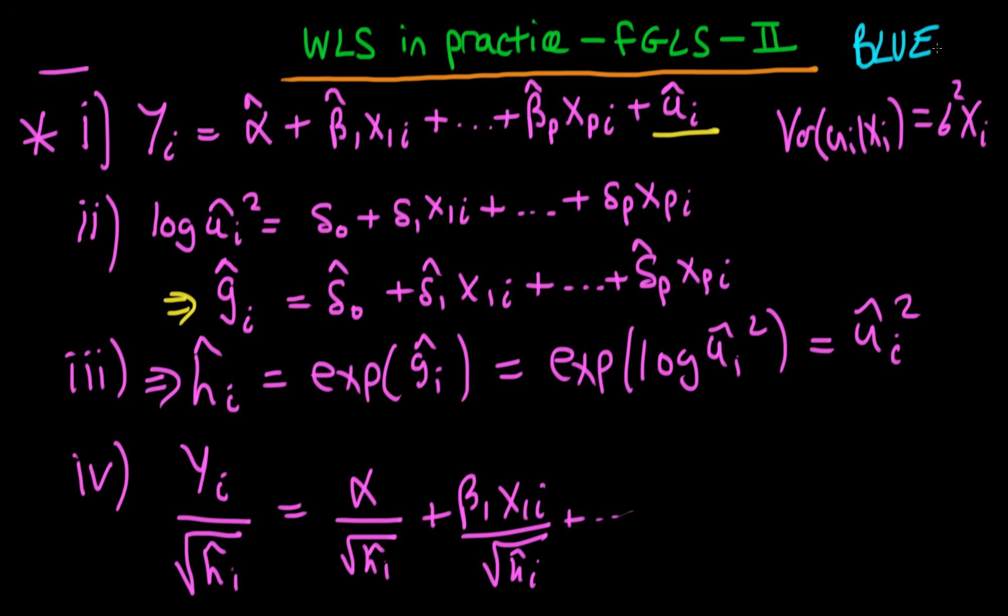so what knock-on effect does that have on our estimator? Because it can't be BLUE, right, because generalized least squares is BLUE. So which of these elements do you think goes away?